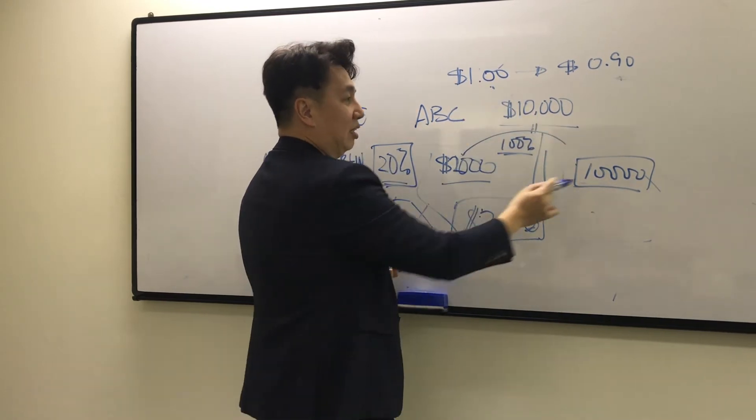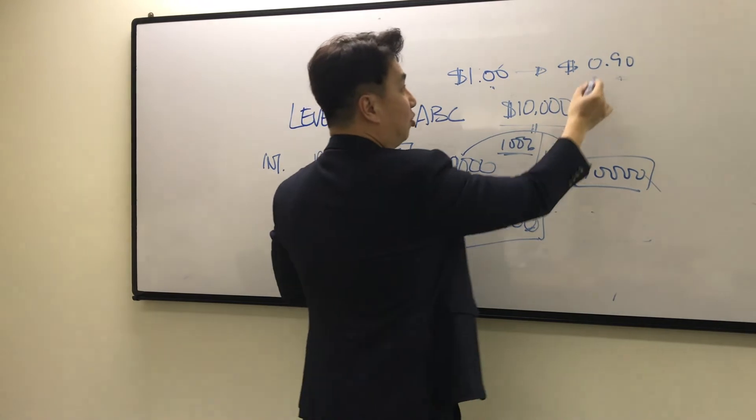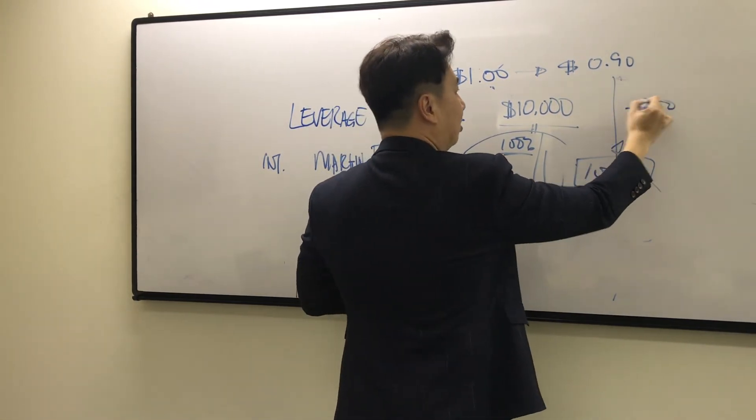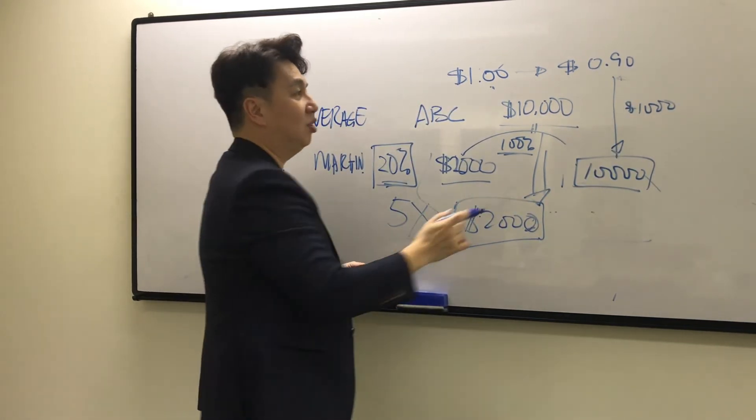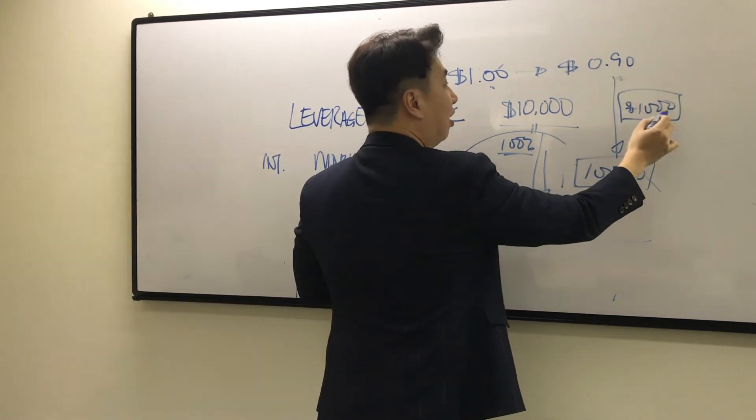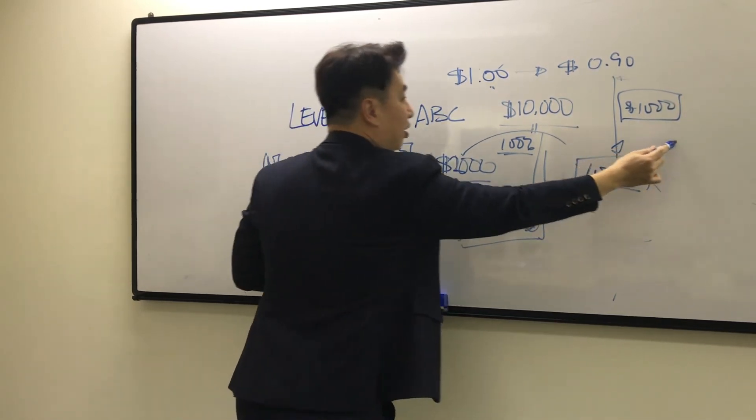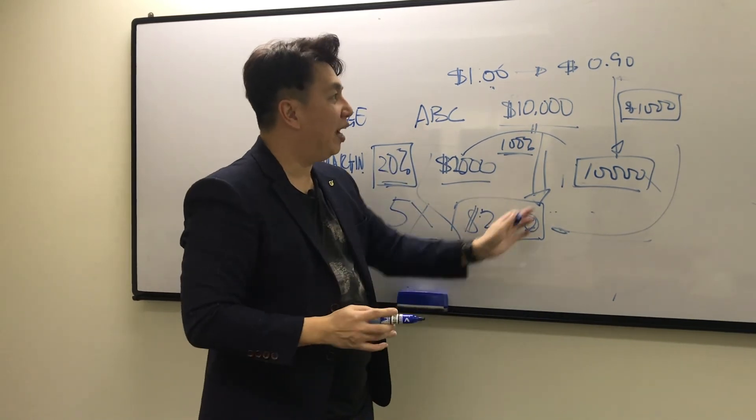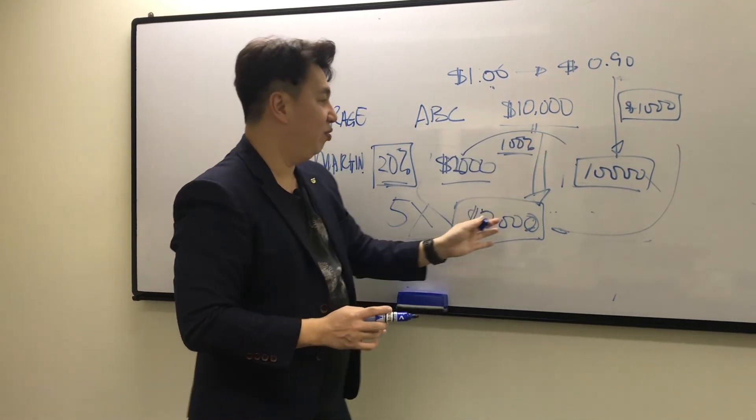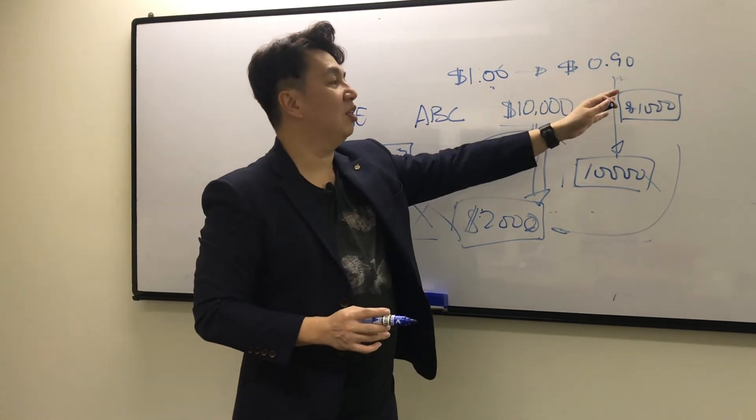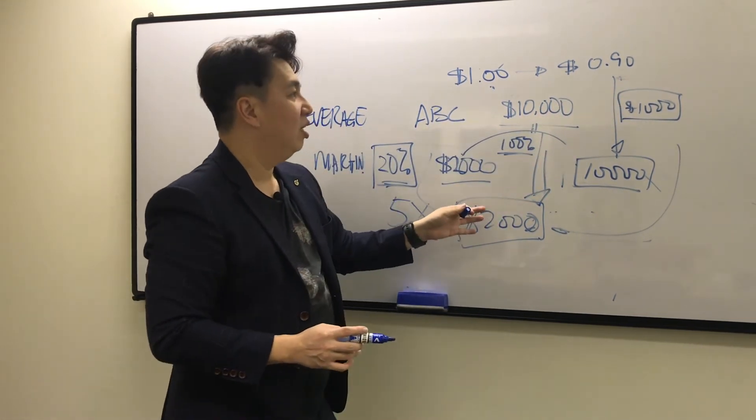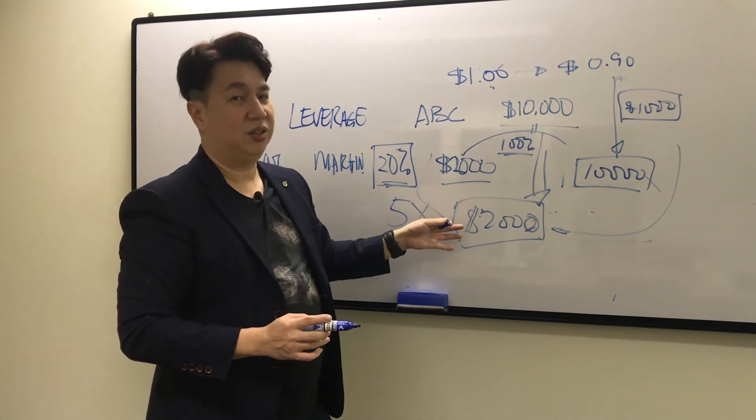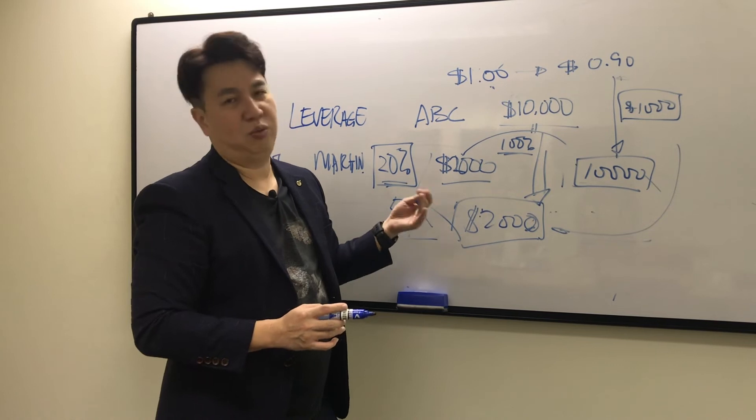$10,000 divided by $1 is 10,000 shares. If it drops to $0.90, you have lost $1,000. $1,000 will be deducted from here. Every day they will do adjustment and compare your current loss with your free balance. If your current loss is less than your free balance of $2,000, there is still money in the account, so you won't get margin call.